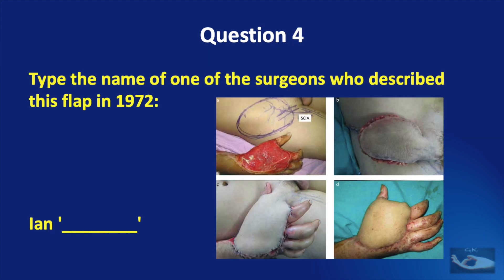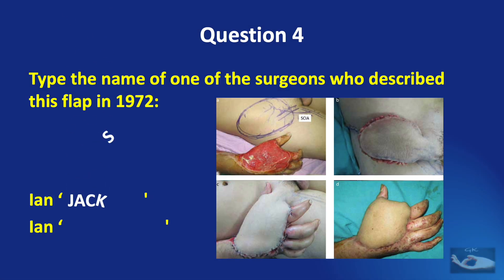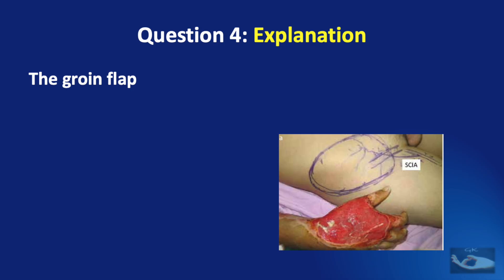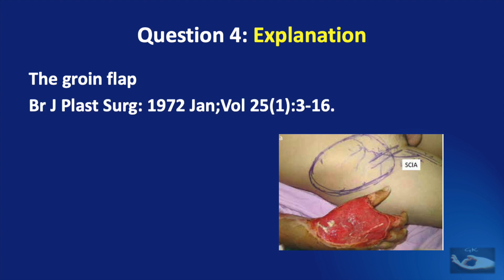Question number four: type the name of one of the surgeons who described this flap in 1972. And the answer is Ian Jackson or Ian McGregor. The groin flap shown in the picture was described in the British Journal of Plastic Surgery in 1972 by Ian A. McGregor and Ian T. Jackson.